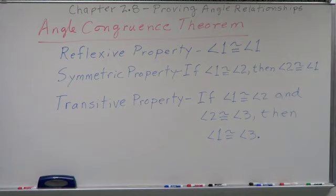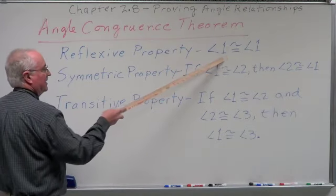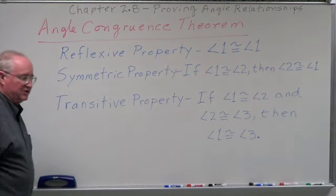We simply use the definition of congruent angles this time, not congruent segments, but the definition of congruent angles. That definition is two angles that are congruent have the same measure, and the converse is true. Two angles that have the same measure are congruent. That allows us to go between the two, congruent and having their measures equal to each other.